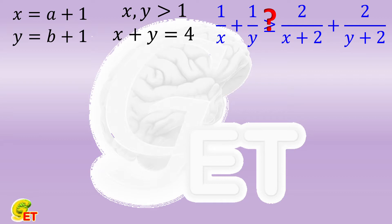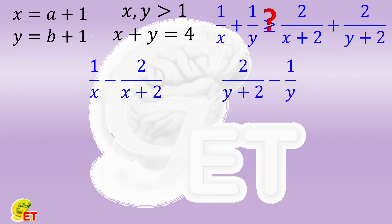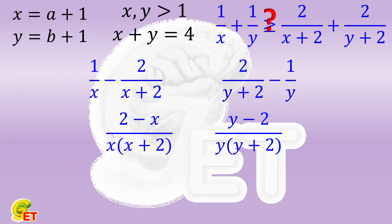We put together all terms that contain x, and put together all terms that contain y as well. We transform the original question into the comparison between the following two functions. The calculation is easy, and it becomes a comparison of those two fractions. Since x plus y equals 4, the two numerators are in fact equal.